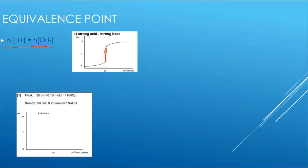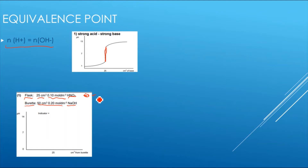Looking at a worked example: in the flask we have HNO₃ — a strong acid — with a given volume and concentration, and in the burette we have NaOH — a strong base. To find the equivalence point, we first find the moles of acid in the flask: 0.025 × 0.1 = 2.5 × 10⁻³ mol.